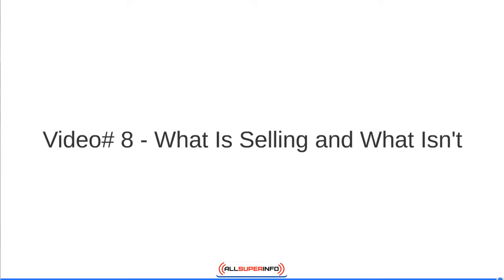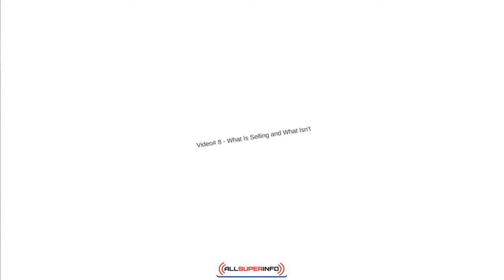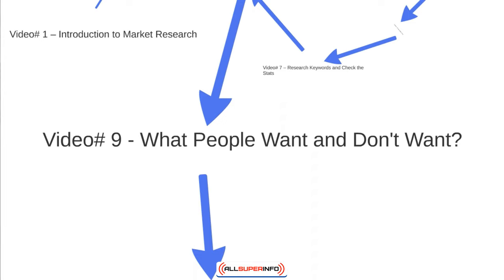Video number eight is about what is selling and what isn't. It's a good idea to look at your competitors and competing products to see what's working. Video number nine covers what people want and what they don't want. Knowing this helps you improve your product and make it stand out. If you know what people don't want, you can exclude it; and if you can offer something competitors don't have, that can significantly improve your product.